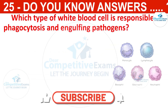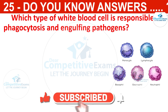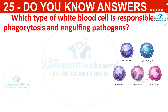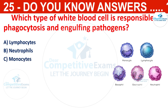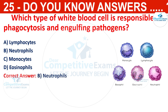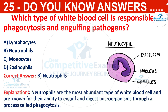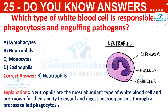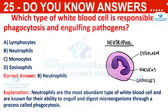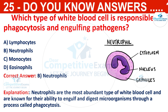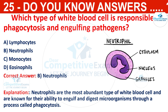Which type of white blood cell is responsible for phagocytosis and engulfing pathogens? The options are lymphocytes, neutrophils, monocytes, or eosinophils. The correct answer is neutrophils. Neutrophils are the most abundant type of white blood cell and are known for their ability to engulf and digest microorganisms through a process called phagocytosis.